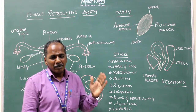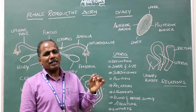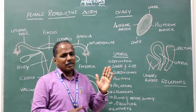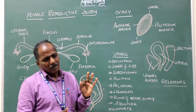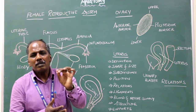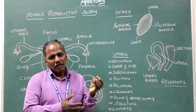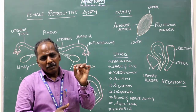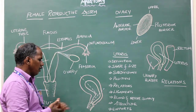Lymphatic drainage: the lymph vessels from the uterus drain into pre- and para-aortic lymph nodes, internal iliac nodes, and external iliac nodes. Structure: the uterus has three layers — outer perimetrium, middle myometrium, and inner endometrium. The perimetrium is the outer peritoneal covering. The myometrium is made up of smooth muscle fibers. The endometrium consists of mucous membrane containing uterine glands and spiral arteries. The mucous membrane of the uterus is lined by simple columnar epithelium with cilia.